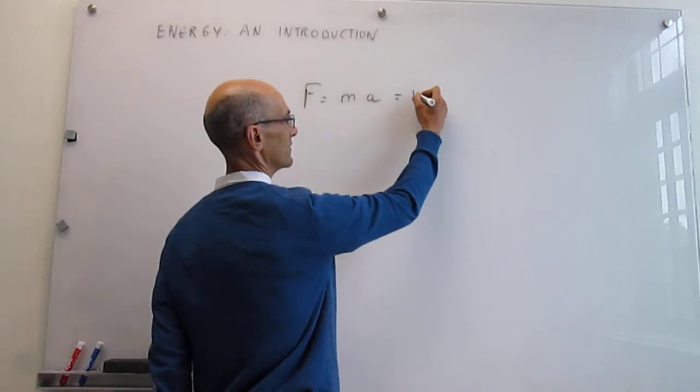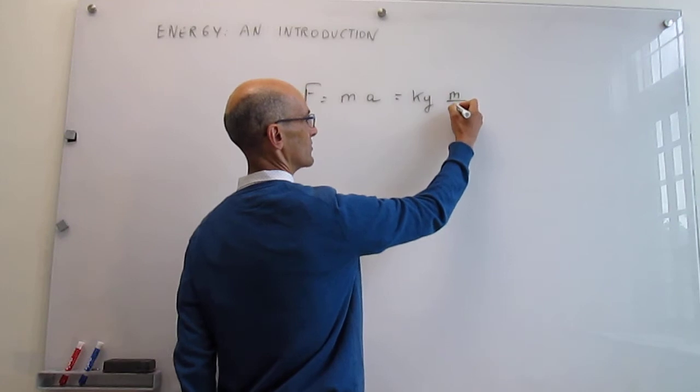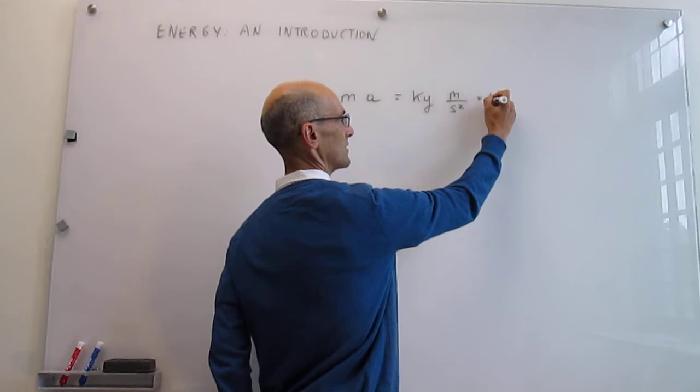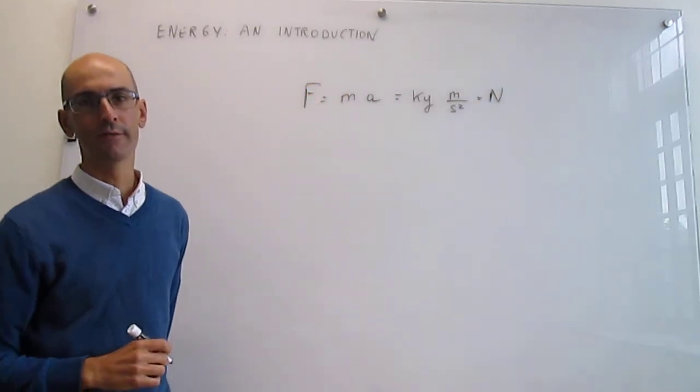The unit of mass is the kilogram, and acceleration is meter per second squared. Instead of using all of those units together, we call this the Newton (kg·m/s²), which is the SI unit of force.